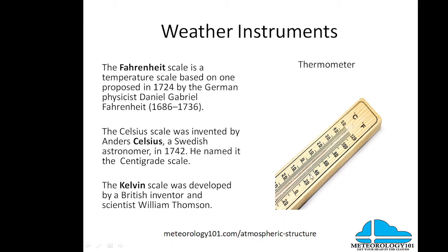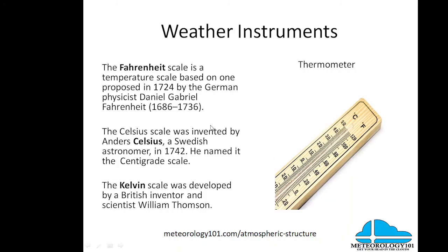Weather instruments include the thermometer with three scales: the Fahrenheit scale, proposed in 1724 by German physicist Fahrenheit; the Celsius scale, proposed in 1742 by Swedish astronomer Celsius (originally called the centigrade scale); and the Kelvin scale, developed by British scientist William Thompson. Zero degrees Kelvin is when all molecular activity comes to a stop — we've never achieved that temperature. The Kelvin scale is used to calculate stability factors in the atmosphere. That wraps up Atmospheric Physics Part 1.